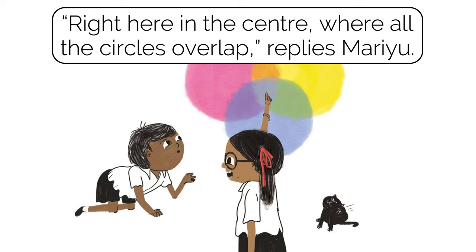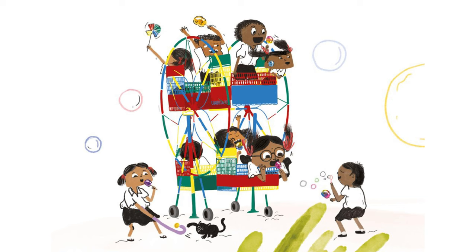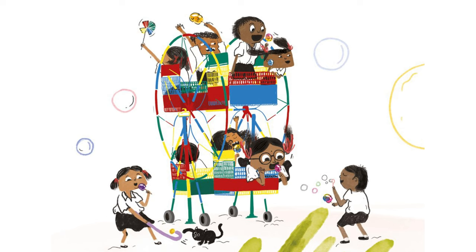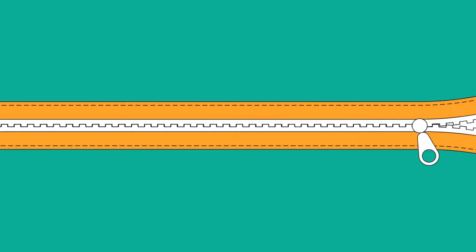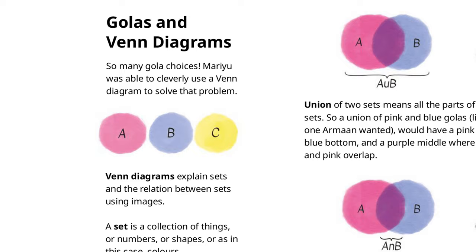So this is how Mario remembered everyone's choices, and all the children could eat the gola of their choice of color at the mela. Wasn't it fun? So children, the concept which Mario used is called Venn diagrams. Let me explain the golas and the Venn diagrams — so many gola choices! Mario was able to cleverly use a Venn diagram to solve that.